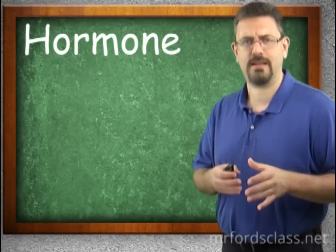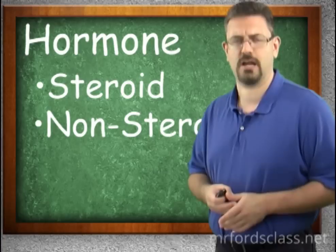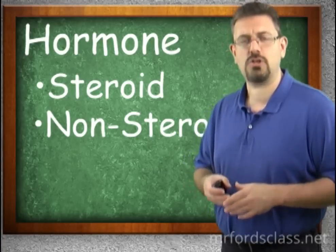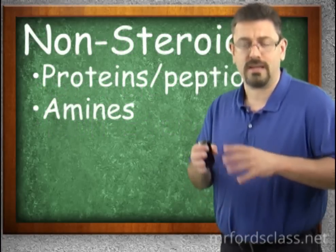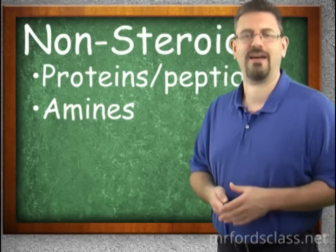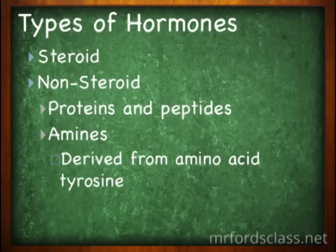A hormone is an organic compound. It can either be, in general, a steroid or a non-steroid. If it's a non-steroid, it can be a protein or peptide, or it can be an amine, which is derived from the amino acid tyrosine. So we have steroids and non-steroids. Within this non-steroid category, we have proteins and peptides, and we also have the amines.